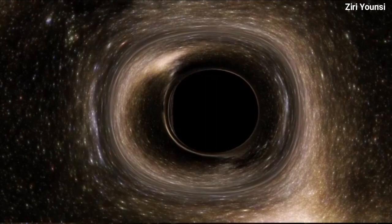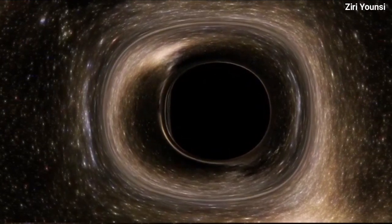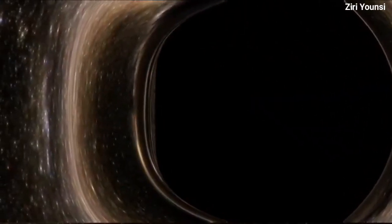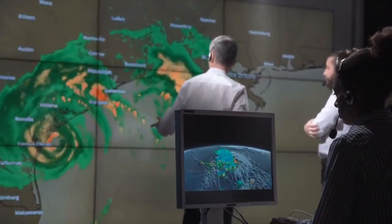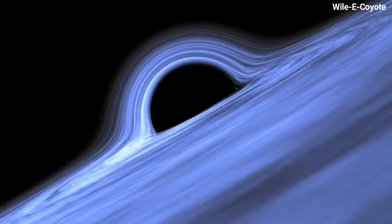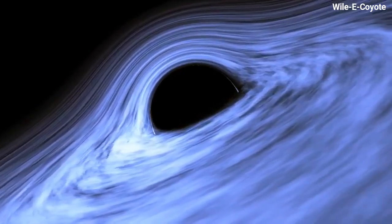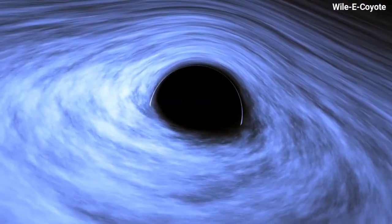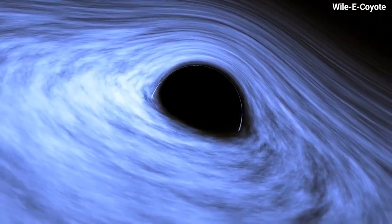In addition, black holes can grow by merging with other black holes. However, if there is nothing nearby, then there's nothing to eat, so we can expect them to stop growing after they have consumed everything in their path. A group of scientists decided to look into it further. They studied so-called dormant galaxies that contained supermassive black holes. These are very old black holes that have accreted the majority of the nearby mass and are no longer active.